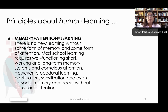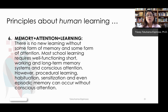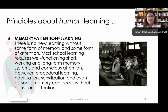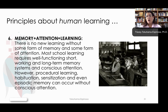A final principle has to do with memory and attention. Now this is too simple — it's not just memory and attention equal learning, there's a lot of other stuff. But as a subtraction: if you don't have memory or you don't have attention, you can't have learning. There is no new learning without some form of memory and some form of attention. Most school learning requires well-functioning short, working, and long-term memory systems. However, there are other types of learning, like procedural learning — learning how to drive a car, walk, or talk — that are based on habituated learning, and even some types of episodic memory can occur without conscious attention.